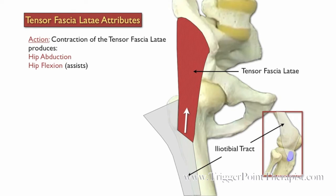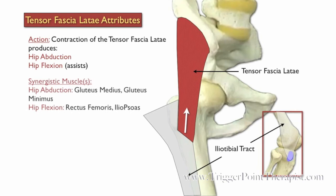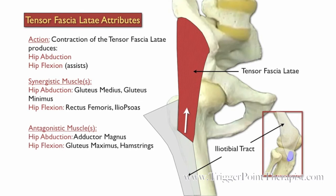Contraction of the TFL produces hip abduction and also assists in hip flexion. The gluteus medius and gluteus minimus assist the TFL during hip abduction, and the rectus femoris and iliopsoas assist the TFL during hip flexion. The adductor magnus opposes the TFL during hip abduction, and the gluteus maximus and hamstrings oppose the TFL during hip flexion.